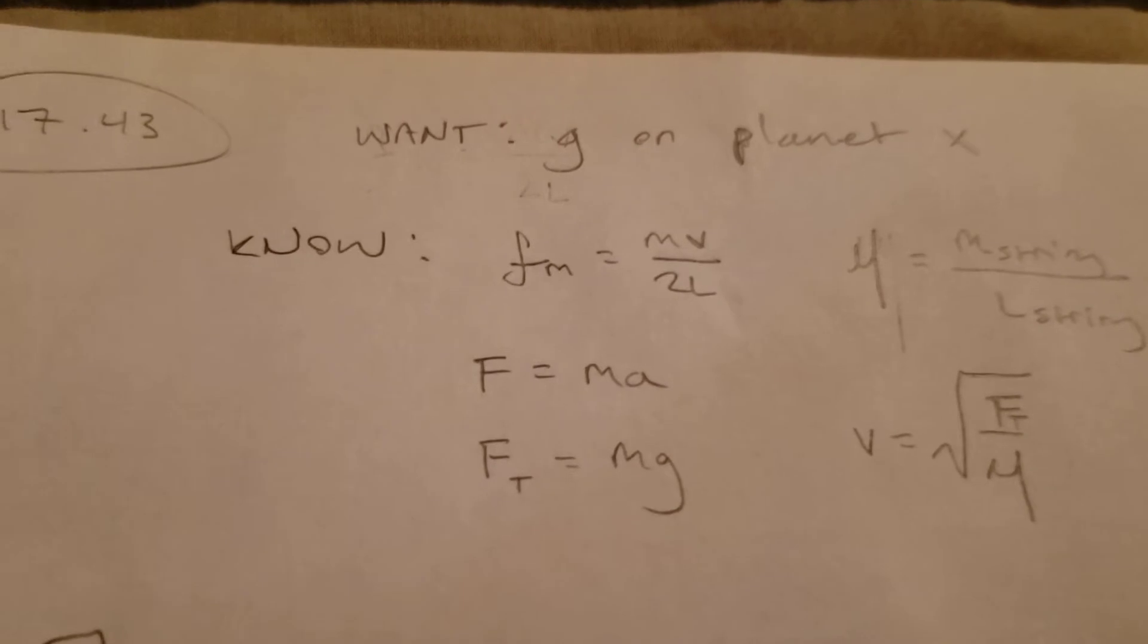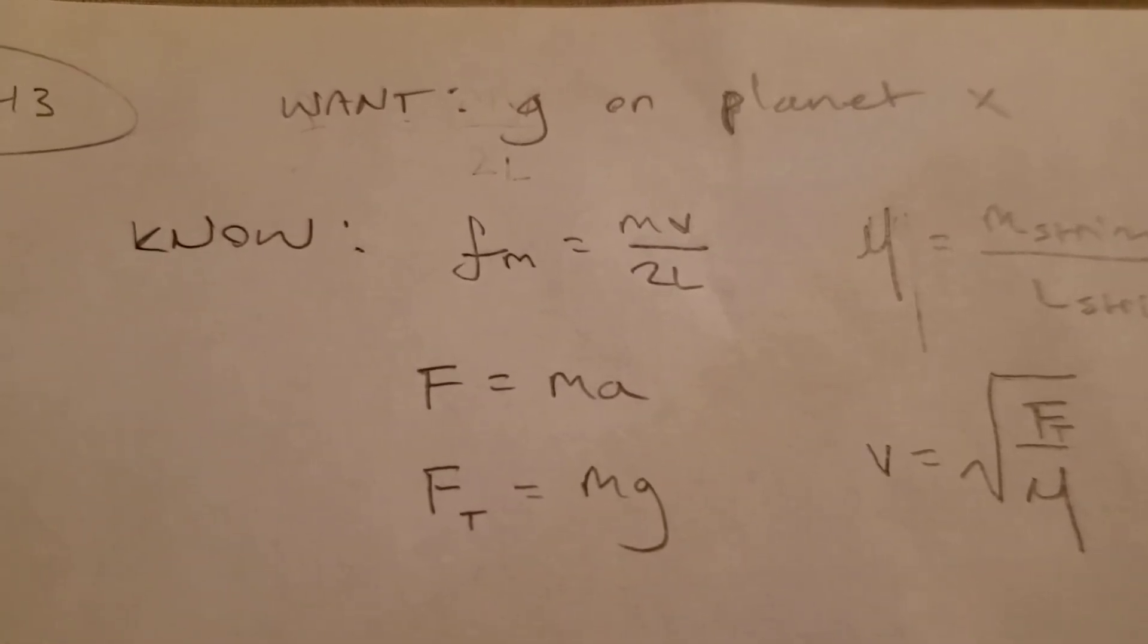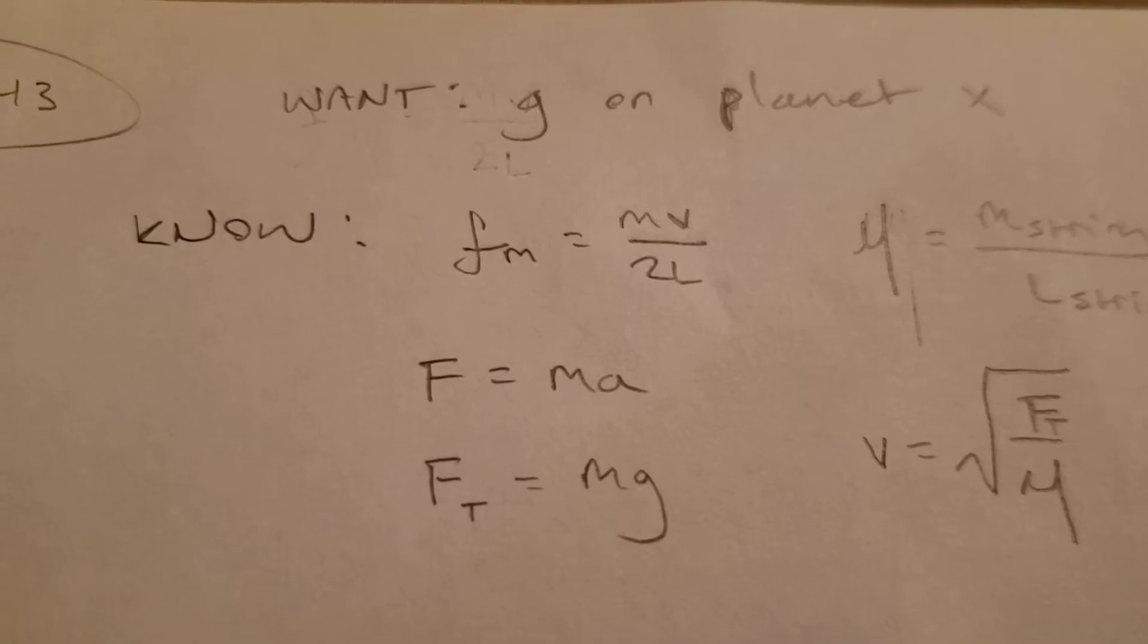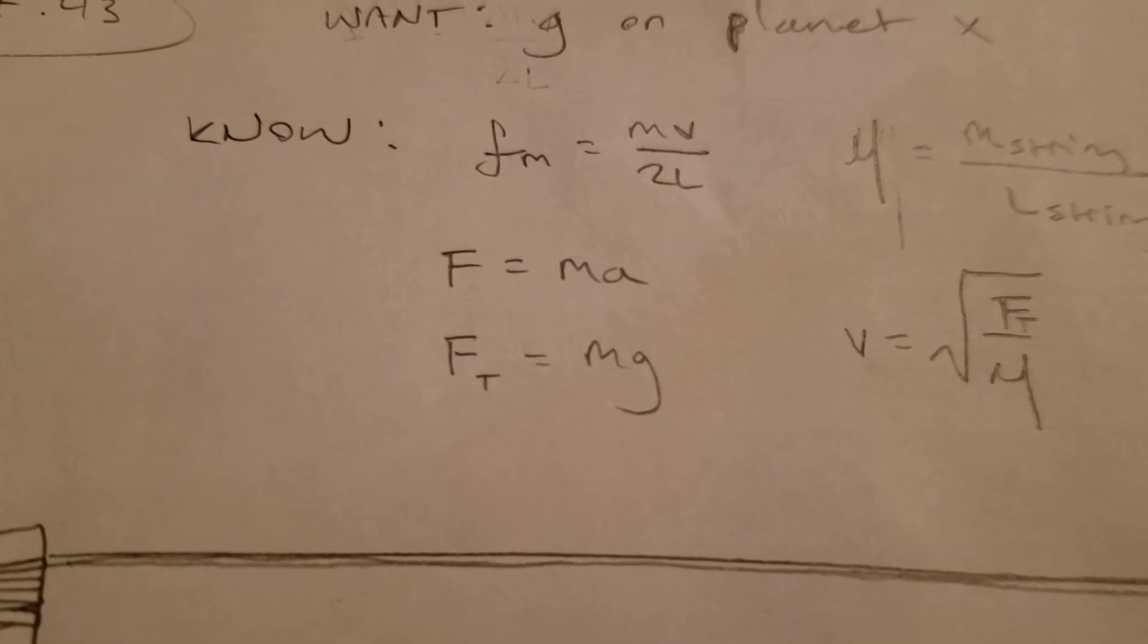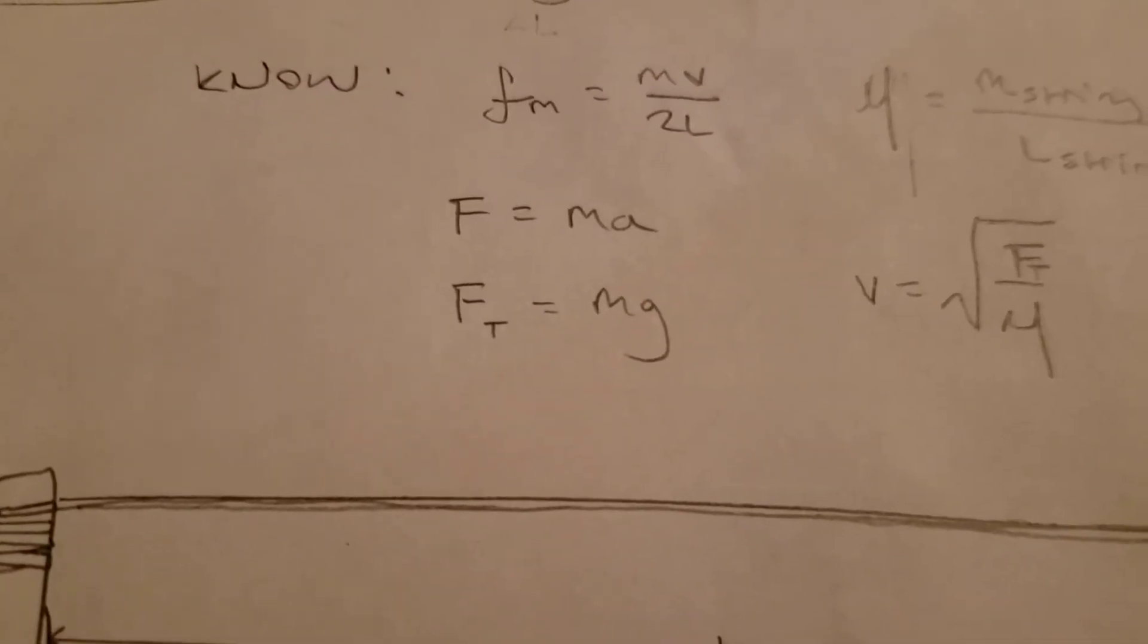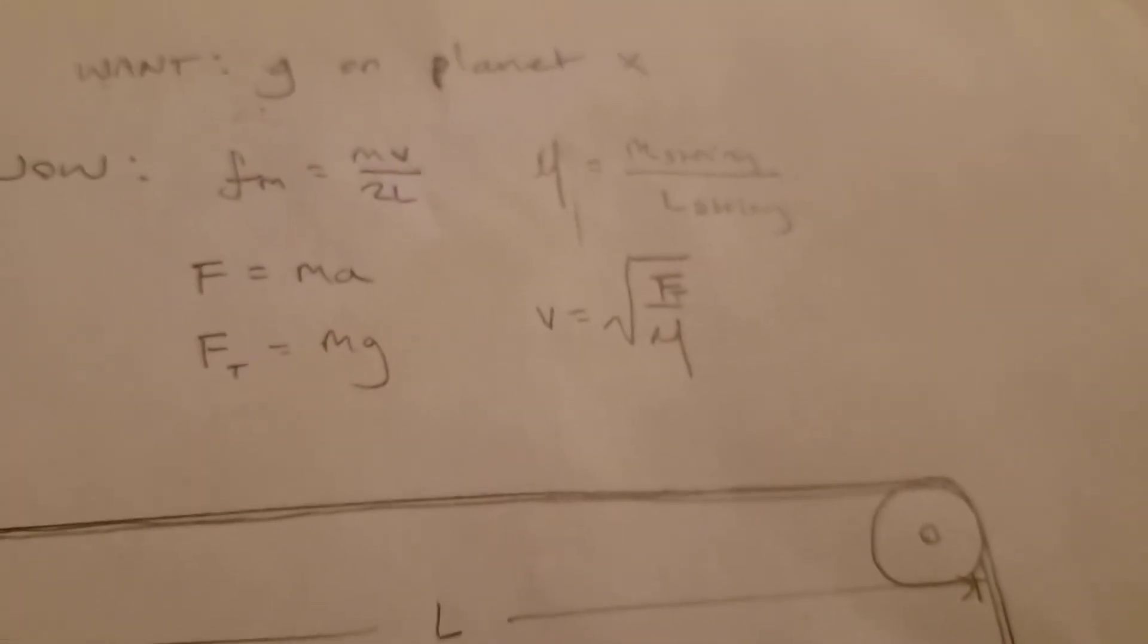Speaking of things we know, we know that the frequency of the waves excited is equal to mass times velocity over twice the length of the string. We know that force is equal to mass times acceleration. Specifically in this case, the force in question is tension, which is equal to mass times the gravitational acceleration since the mass is hanging on a vertical rope.